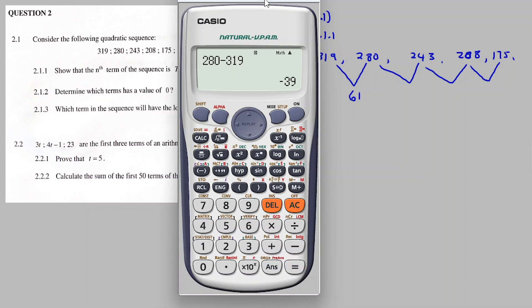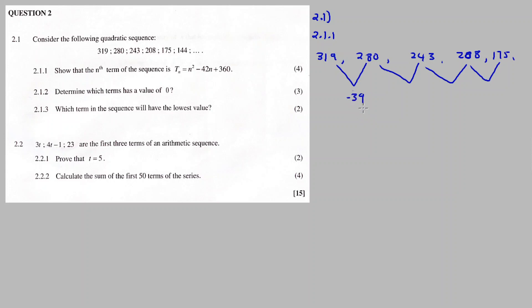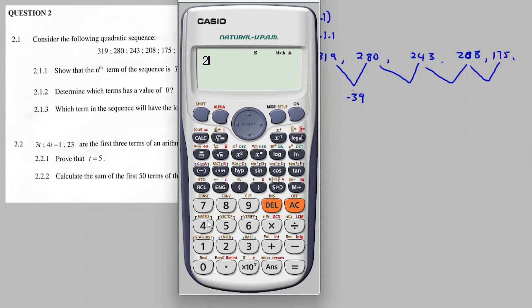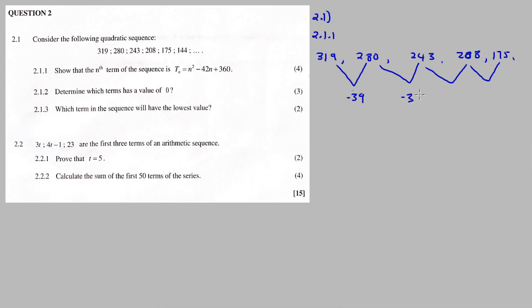The first differences: 282 minus 319 gives negative 37, then 243 minus 282 gives negative 39, then negative 35 — wait, let me work this out properly. The first differences are negative 37, negative 35, negative 33, and so on. Then subtracting consecutive first differences gives a second common difference of 2.